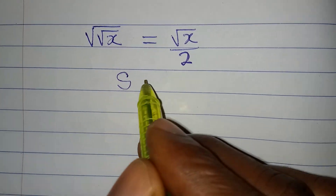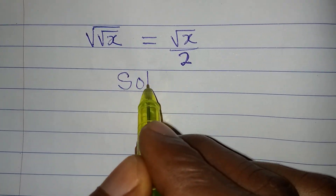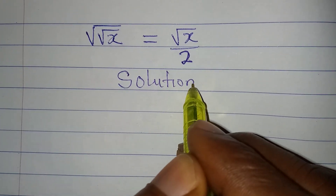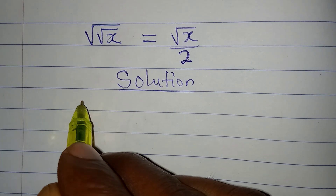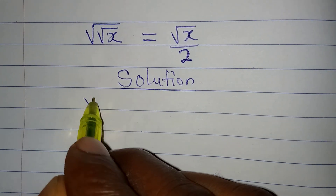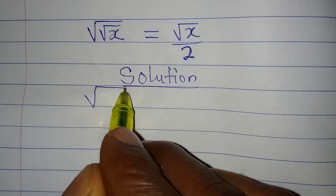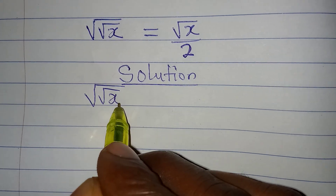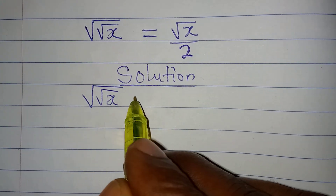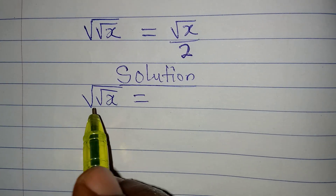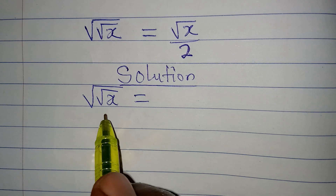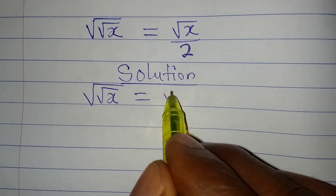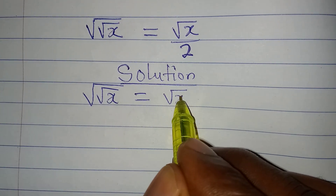Hello everyone, welcome to Few Cool Mathematics, where we provide detailed solutions to math problems. The question we have before us today is: the square root of the square root of x is equal to the square root of x over 2.